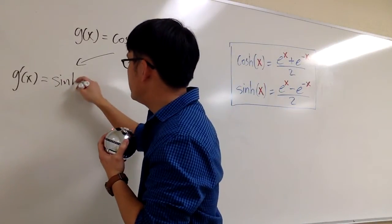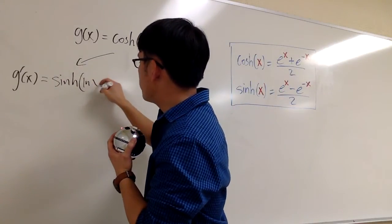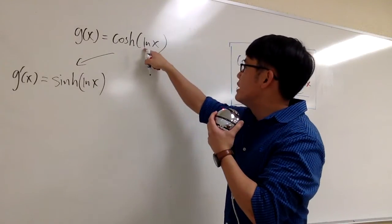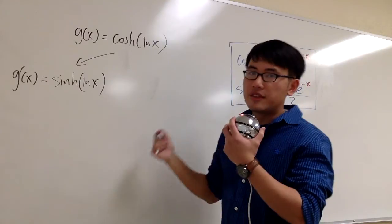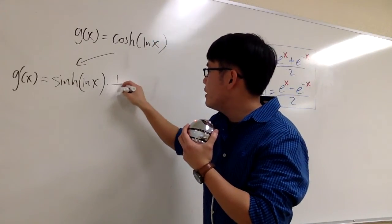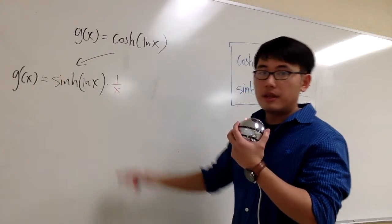So we have positive sinh. And the input will stay the same. So we have the ln x inside. But then, because the inside is ln x, because of the chain rule, we have to multiply by the derivative of the inside function. And the derivative of the inside is 1 over x.